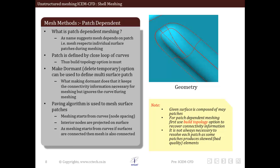The patch dependent method also uses a paving scheme to mesh surfaces. Meshing starts from curves and thus the node distribution on curves will decide the mesh on surfaces. This also clarifies the necessity of build topology operation, since if it is not performed then adjacent surface meshes will not be connected.